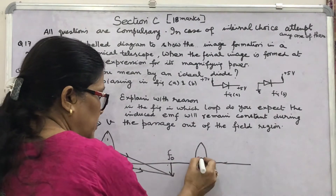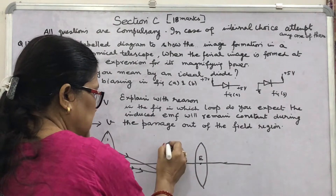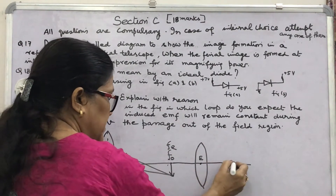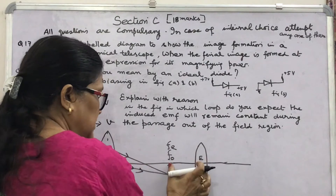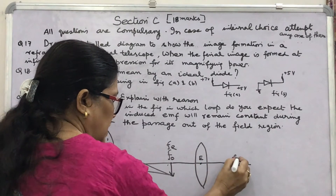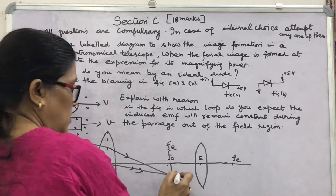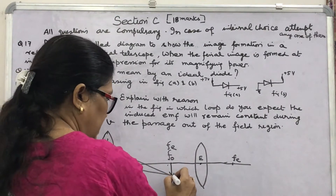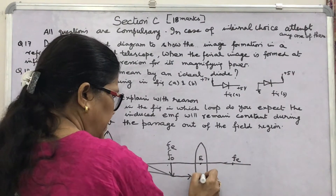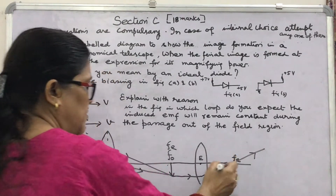First of all, write E for the optical centre of the eyepiece, and this is the FE point — at the same distance. Mark FE here, and the other focal point for the eye lens. Now, one ray parallel to the principal axis will pass through FE — a ray parallel to the principal axis passes through the focus.